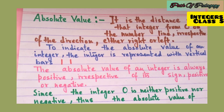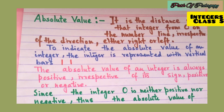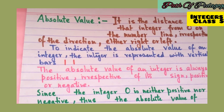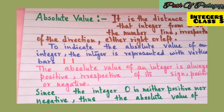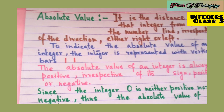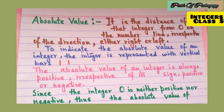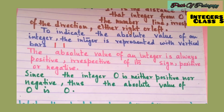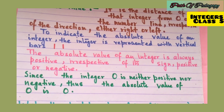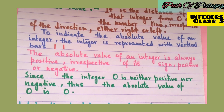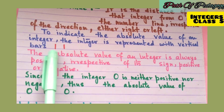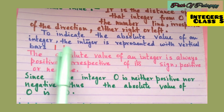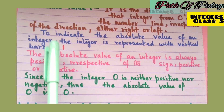No matter what the direction of the integer is — whether it is on the left side of 0 or on the right side of 0 — absolute value is the distance of any given integer from 0. To indicate the absolute value of an integer, it is represented with vertical bars, and inside those bars you write the integer.